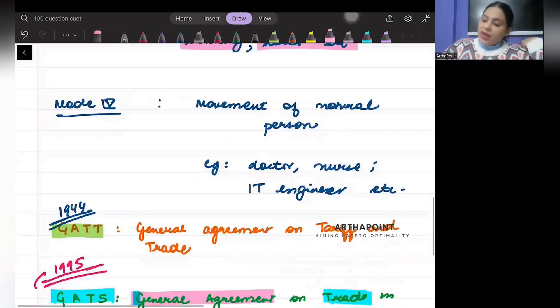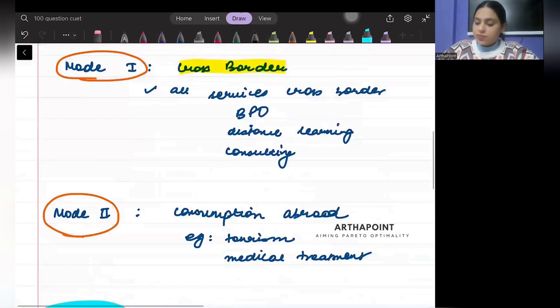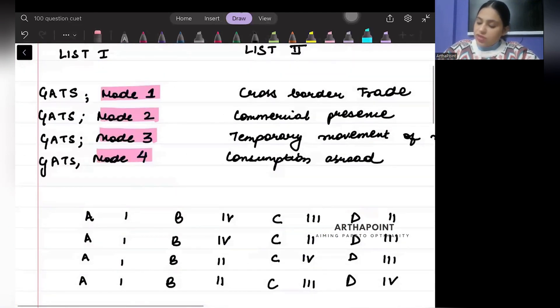You are setting up your commercial presence in other places and providing your service there. So that is Mode 3. And at last you have Mode 4, and in Mode 4 you have movement of natural person. So they are providing their services outside India but they are Indians.